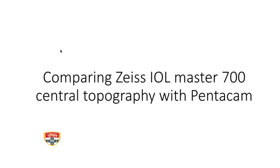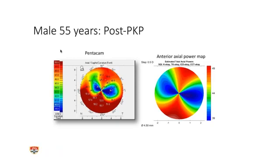Being a skeptical person, I compared these images to what I do with my normal topography, which is generally Pentacam. Here's a patient — post full-thickness corneal transplant. The Pentacam is on the left-hand side; you can see there's a lot of astigmatism, it's pretty steep inferiorly. That's the anterior axial power map on the right — looks pretty similar, color-coded to be reasonably consistent. The anterior axial power map covers approximately four millimeters of central cornea, whereas the Pentacam goes over about eight millimeters.